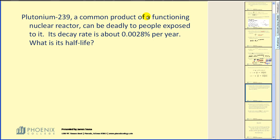Plutonium-239, a common product of a functioning nuclear reactor, can be deadly to people exposed to it. Its decay rate is about 0.0028 percent per year. What is its half-life?